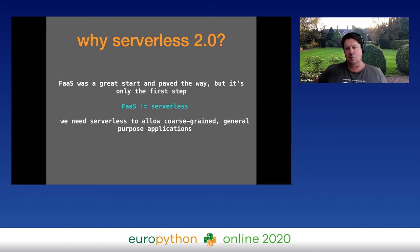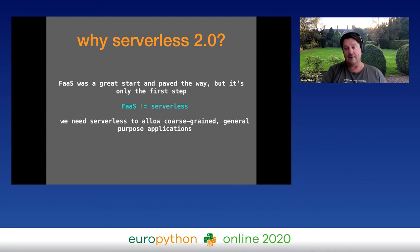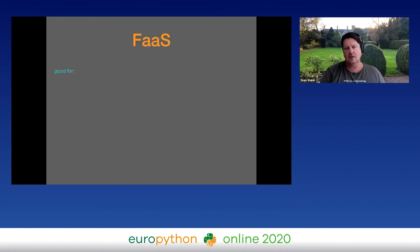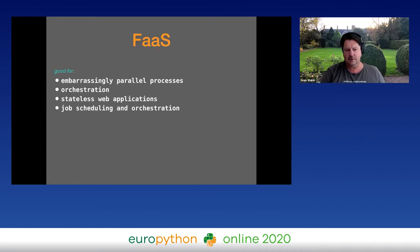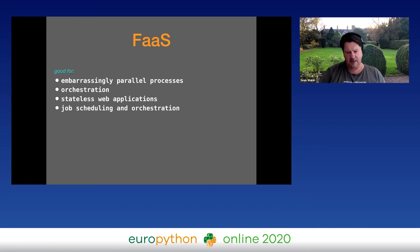We need to be able to allow coarse-grained, general purpose applications to exist in serverless — not exactly a fine-grained function, but maybe an entire application might be deployed to a serverless platform. Function as a service is great for embarrassingly parallel processing, orchestration, stateless applications, job schedule orchestration, especially things that are very low impact on the database — quickly retrieving data, making a decision, and writing data back.